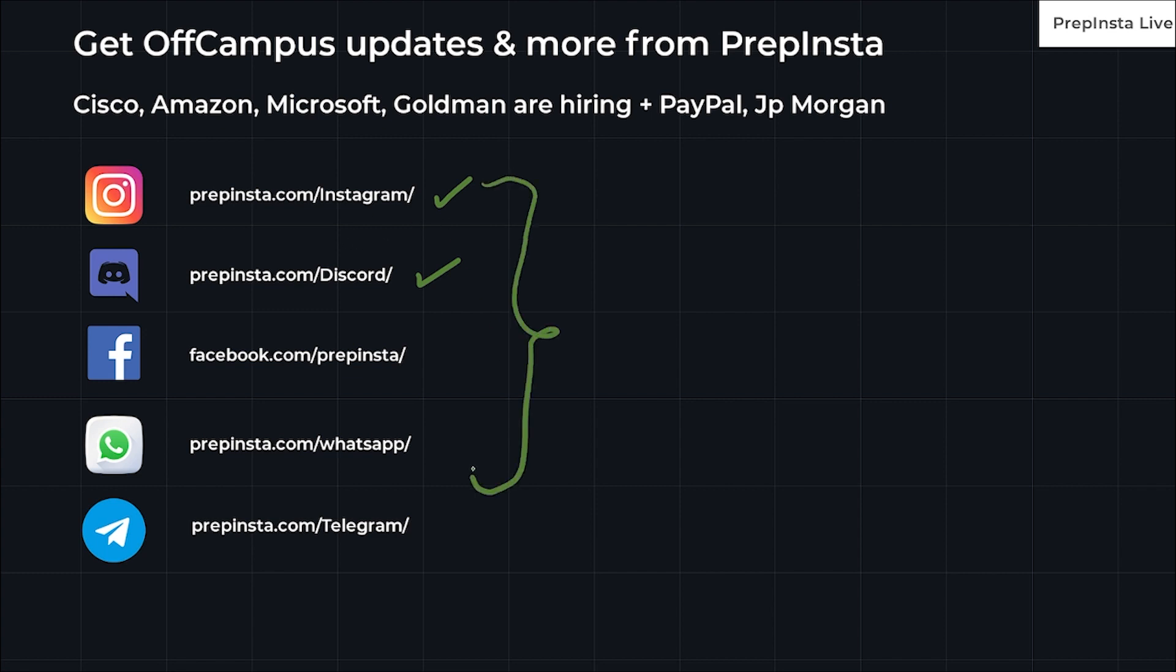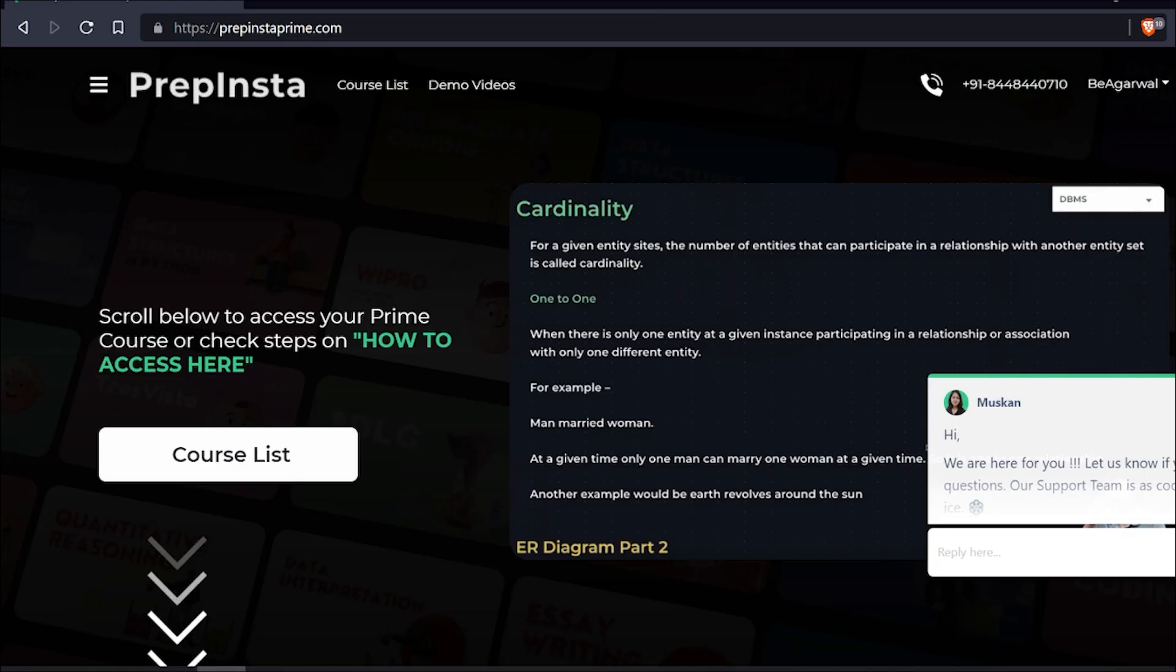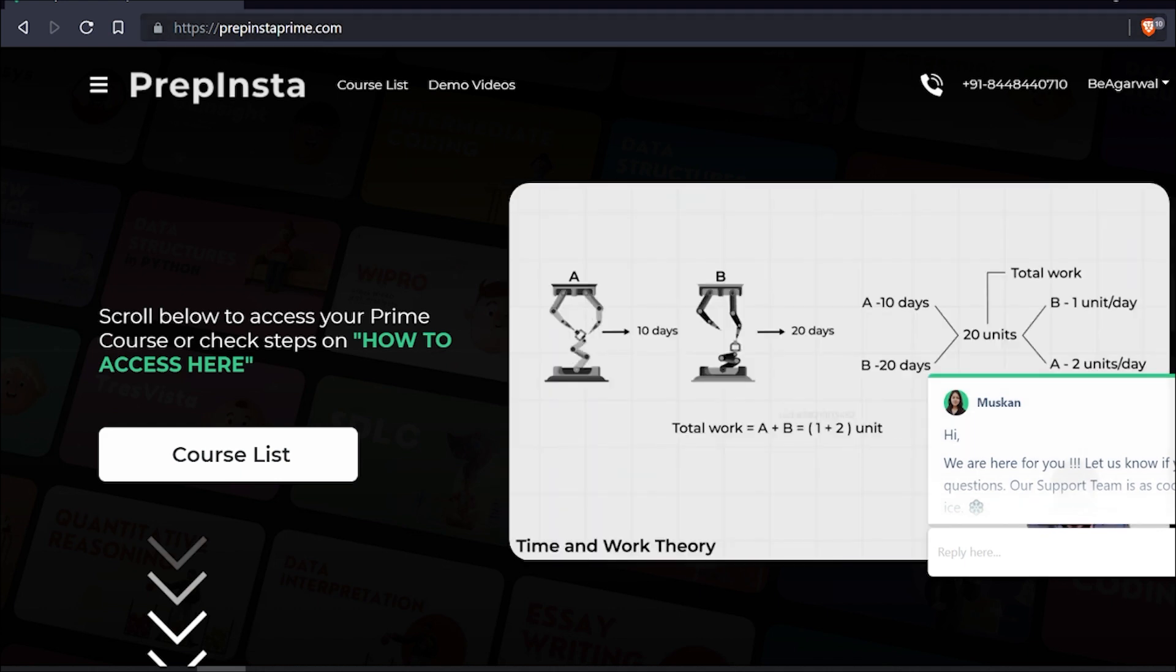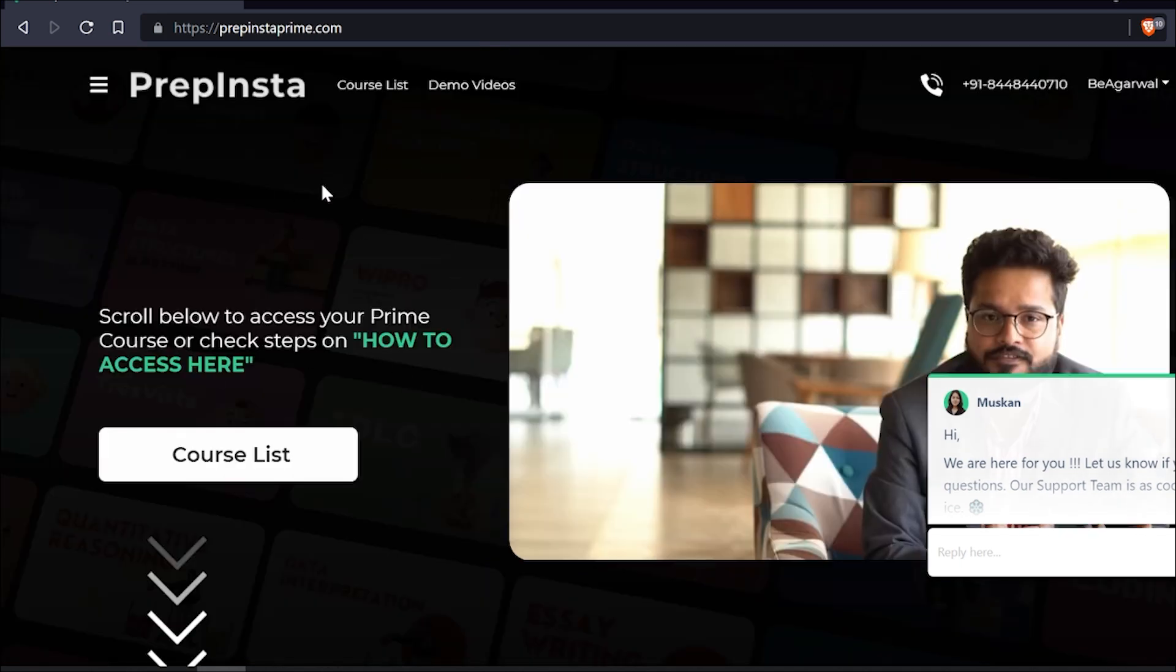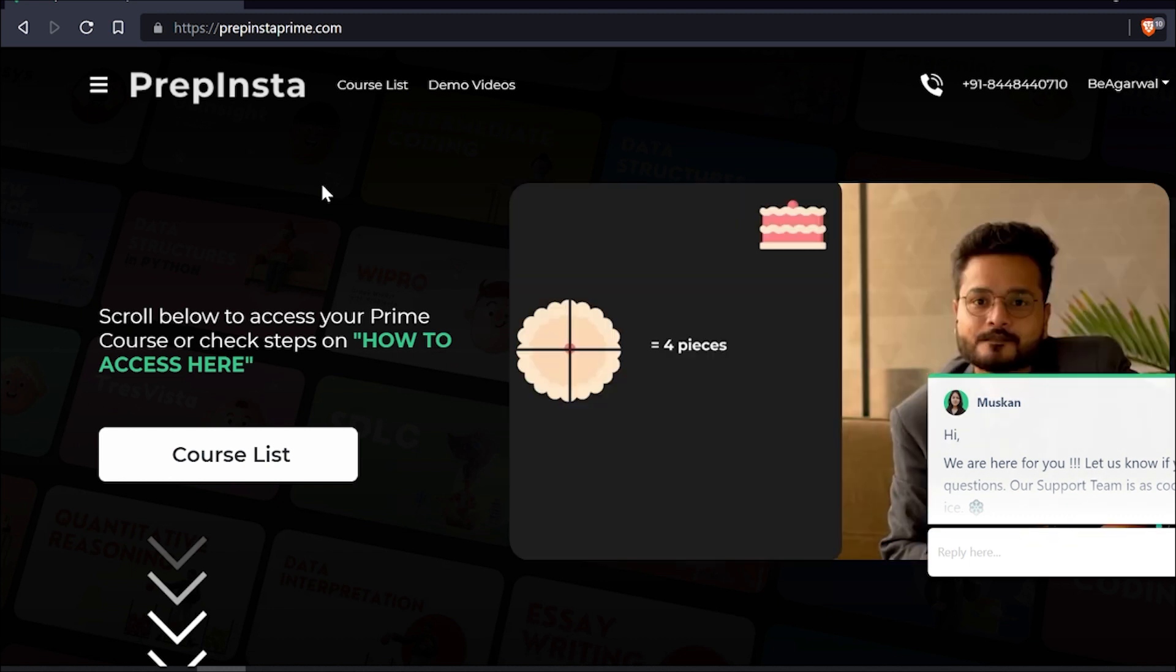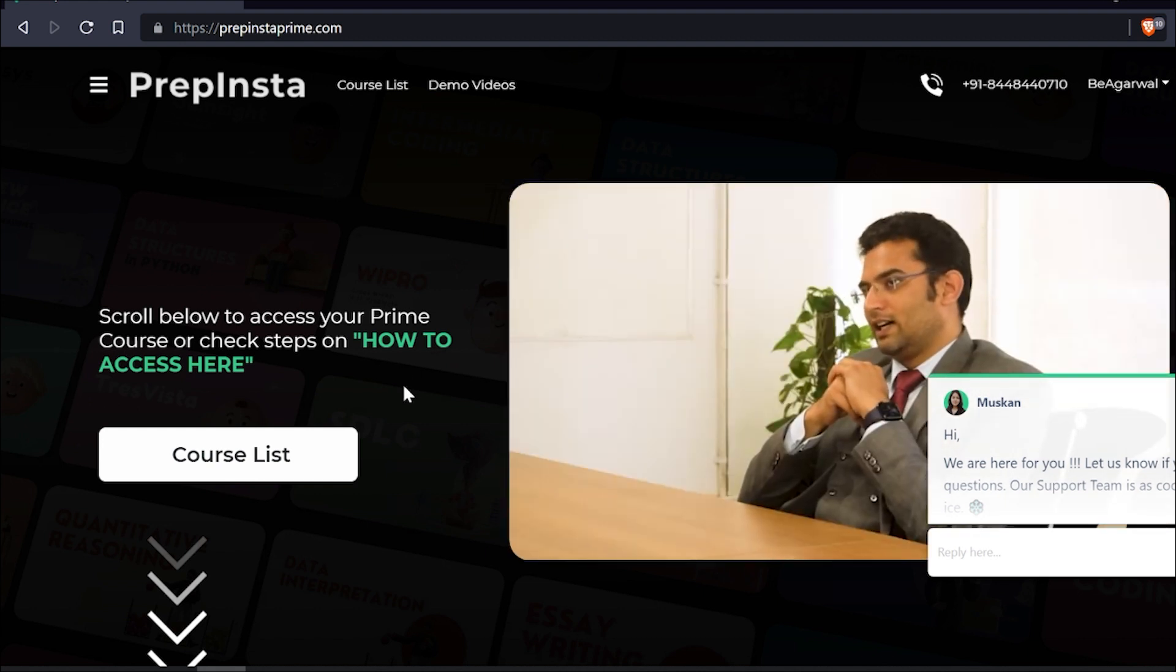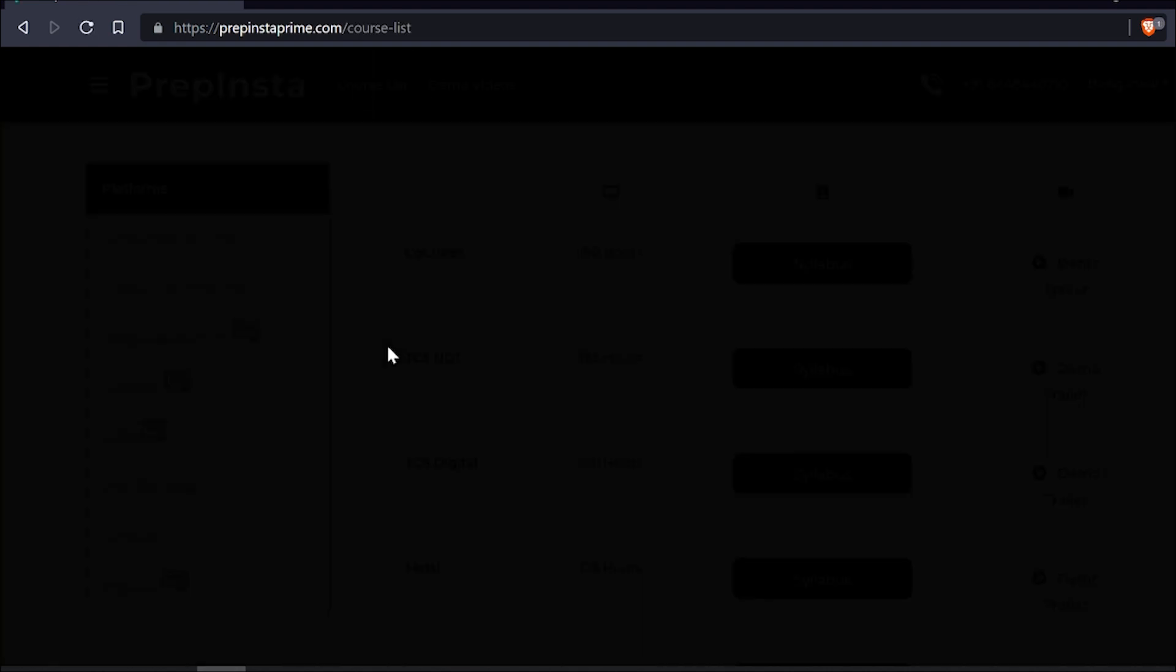You can also join the WhatsApp group. You will get all the links in the video description. Before going further, let me show you how you can go to prepinsta prime.com. Just hit the URL prepinsta prime.com, you will get this link in the description below. If you want to purchase this platform, you will not get only one or two courses, you will get ample number of courses, around more than 100 courses.